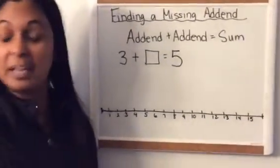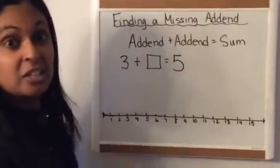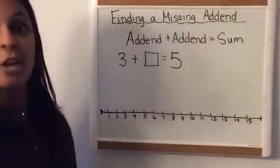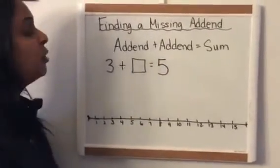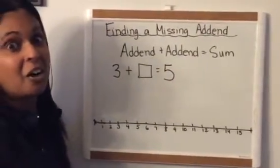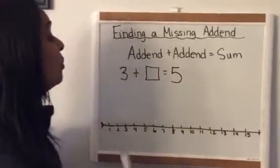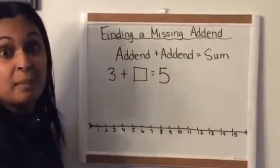So on your question on your pages you will see lots of questions where there's a missing addend. Normally we are trying to find the sum. Now you're doing a little bit of what when you get older they call algebra. We're trying to find a number that's missing from the question.